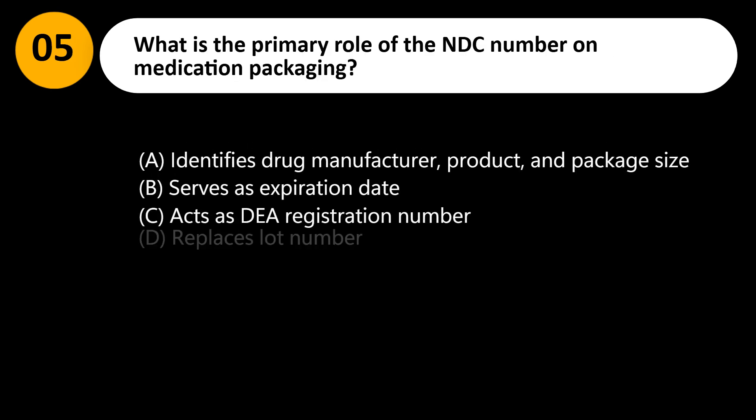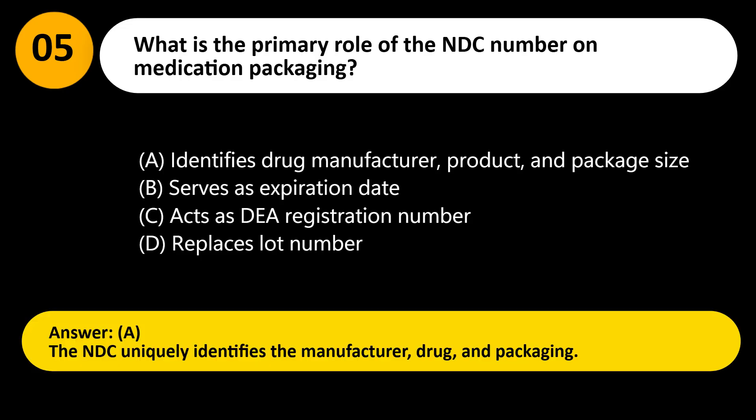What is the primary role of the NDC number on medication packaging? A. Identifies drug manufacturer, product, and package size. B. Serves as expiration date. C. Acts as DEA registration number. D. Replaces lot number. Answer: A. The NDC uniquely identifies the manufacturer, drug, and packaging.